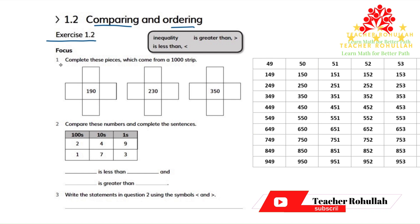The first question in this exercise is asking us to complete the pieces which come from a 1000 strip. The first piece is having five squares and 190 is in the center of it.